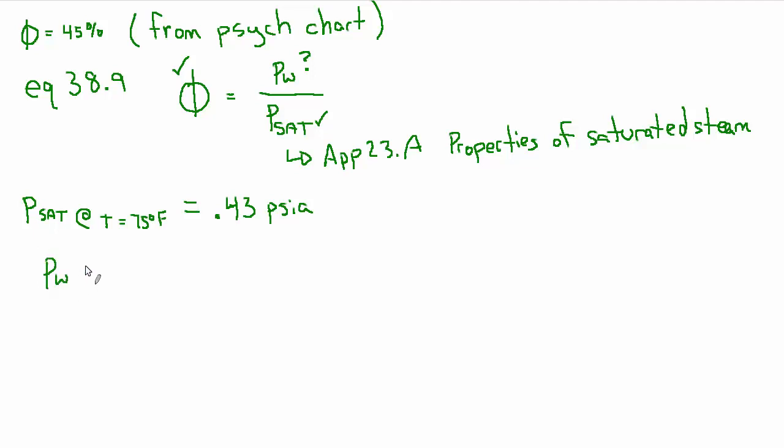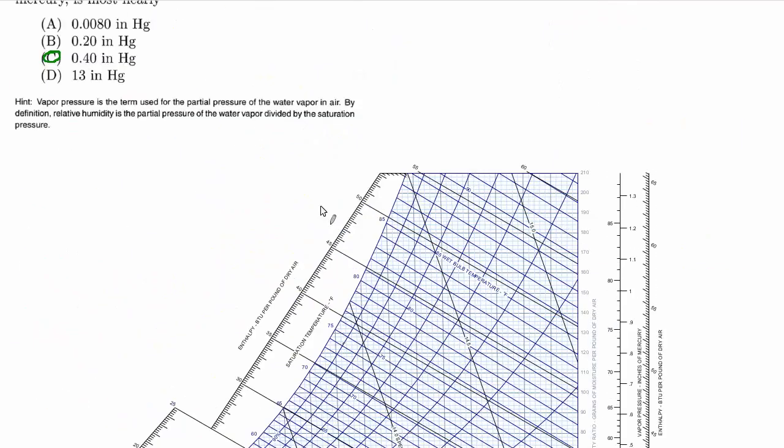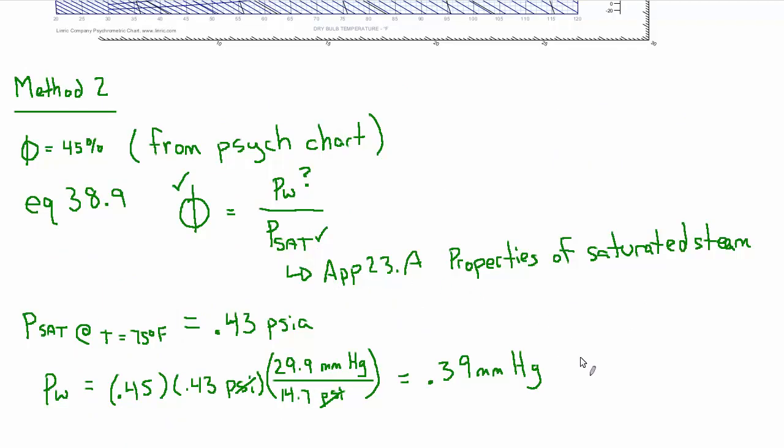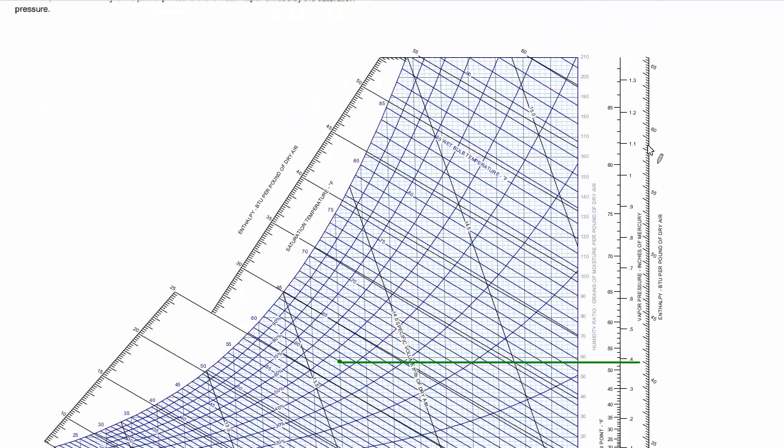So partial pressure of water vapor then equals 0.45, and I'm doing the algebra and plugging in the numbers at the same time, times 0.43 PSI. And let's also convert to millimeters of mercury at the same time. So one atmosphere is 29.9 millimeters of mercury. If you have an old school barometer on the wall, then you know that number. And in PSI, an atmosphere is 14.7. So PSI cancels, and we end up with millimeters of mercury. And that works out to about 0.39 millimeters of mercury, which is close enough to 0.4. So again, it checks out answer C. This is the way most students will go for this problem if they don't have a psychometric chart that has vapor pressure.